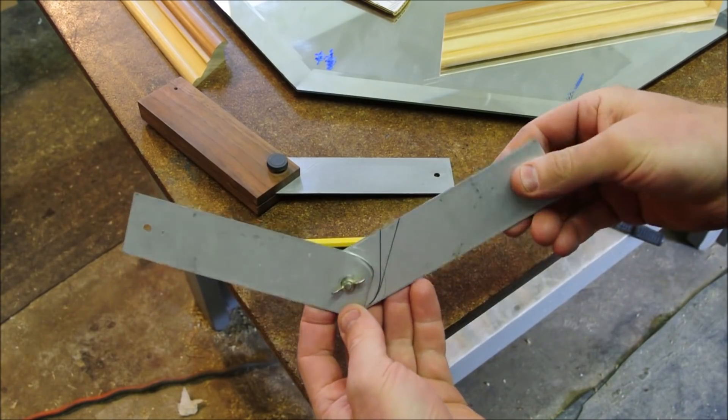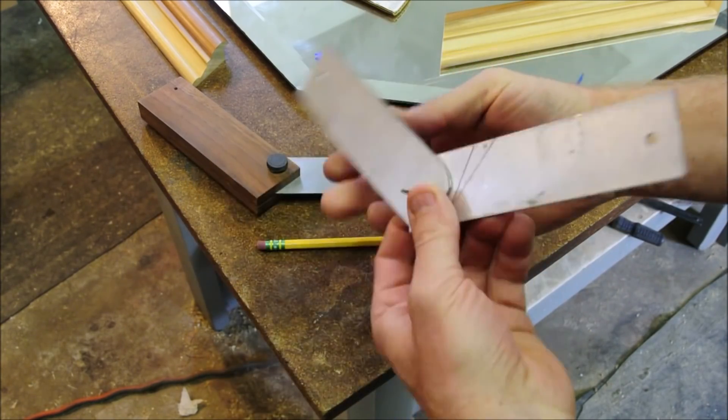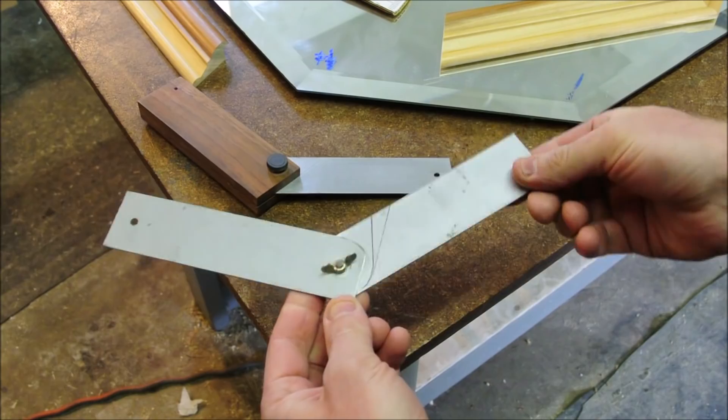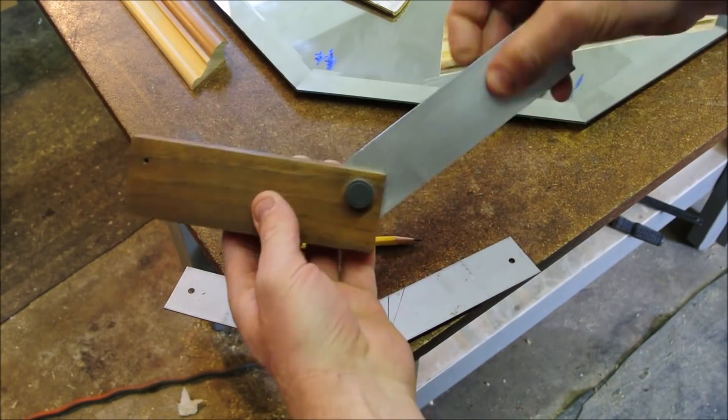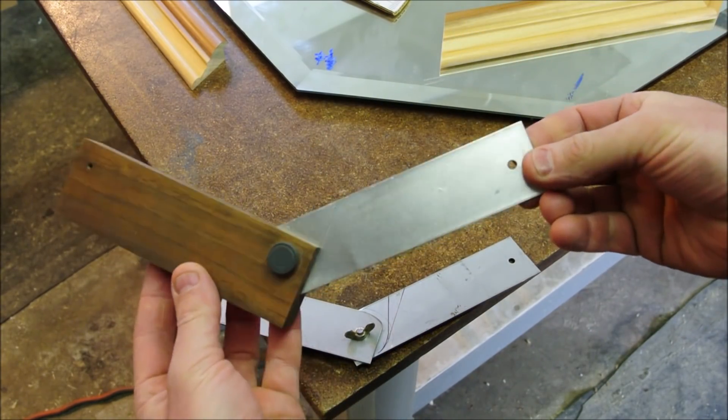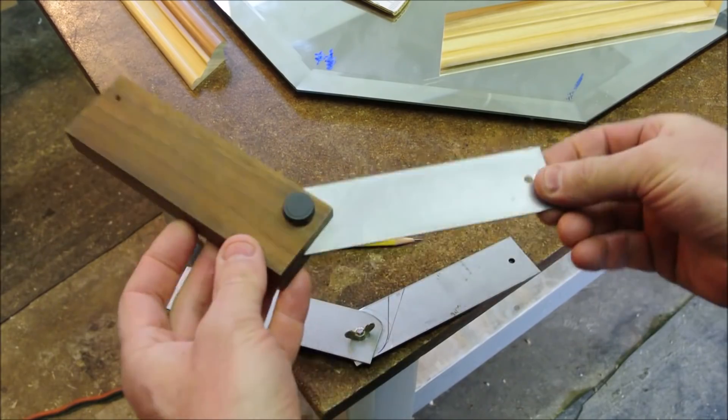So look, this is just two pieces of scrap metal that are screwed together with a wing nut. I have a fancier version of that that I use as an angle finder, but it's not necessary.